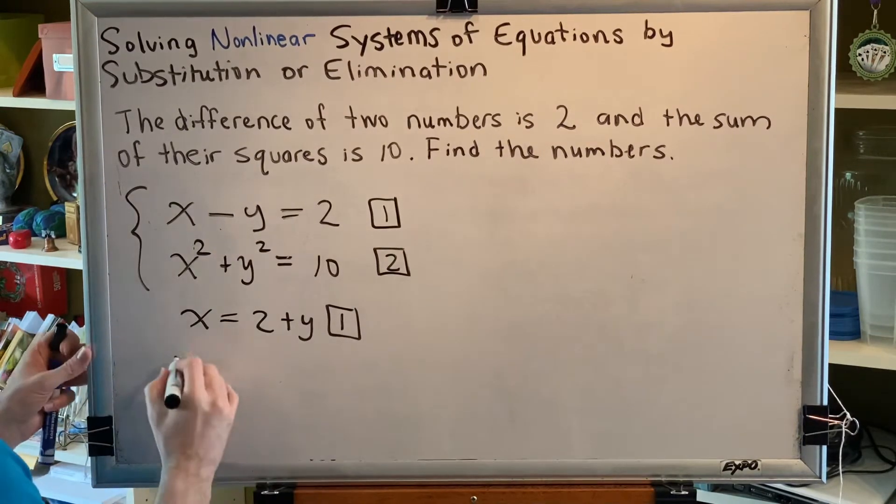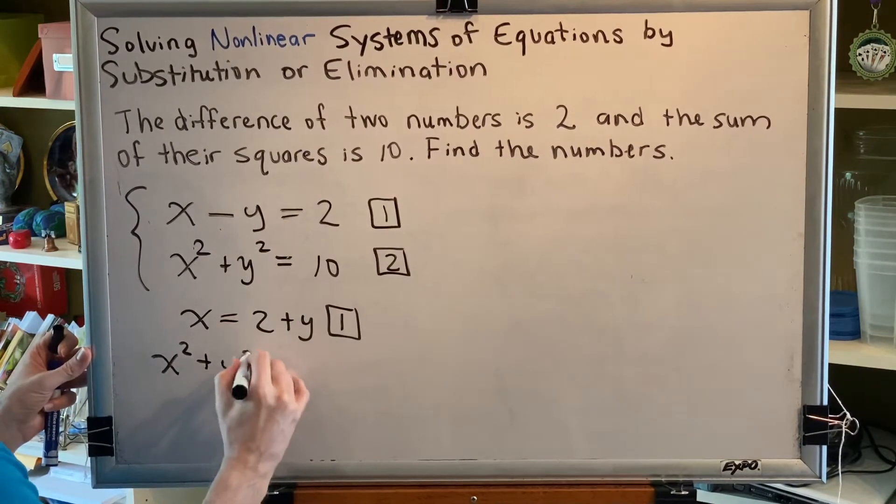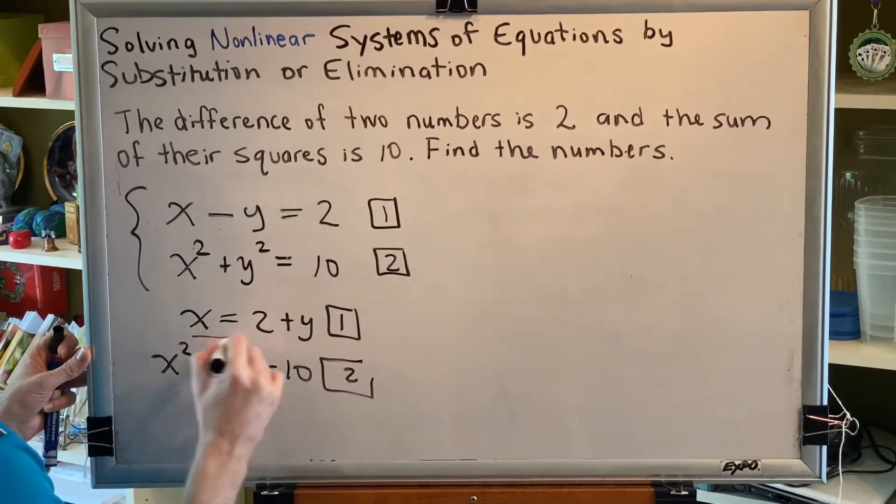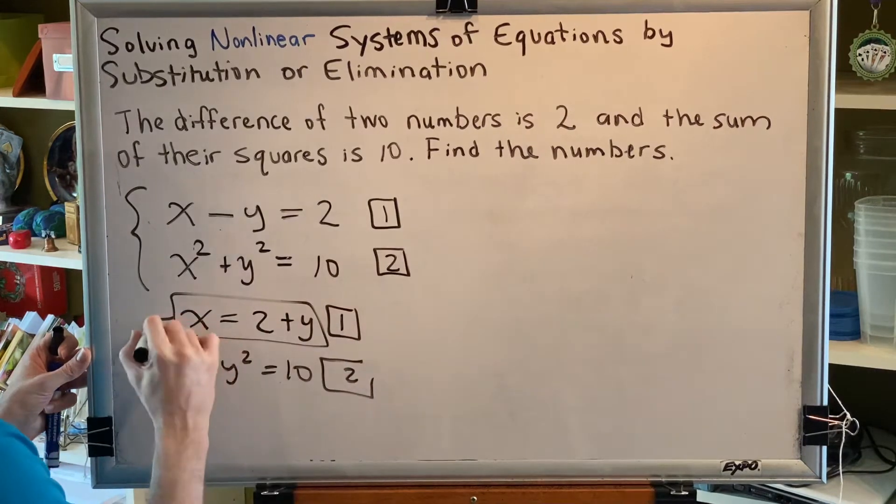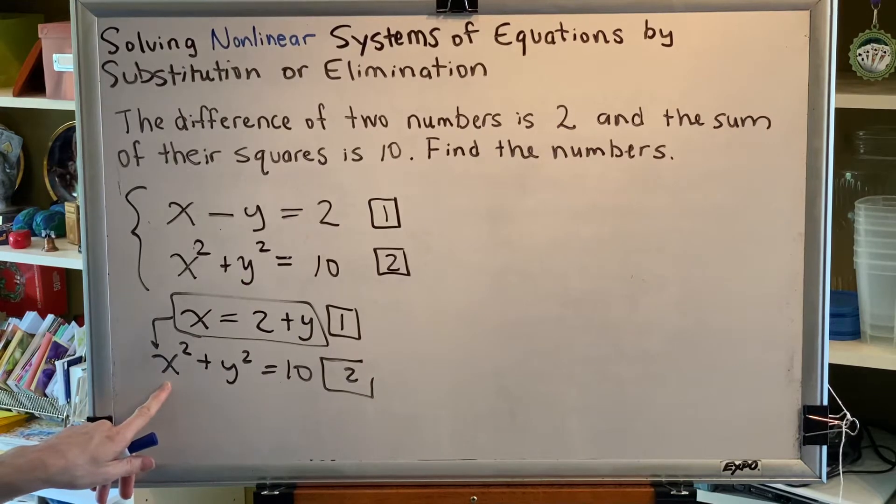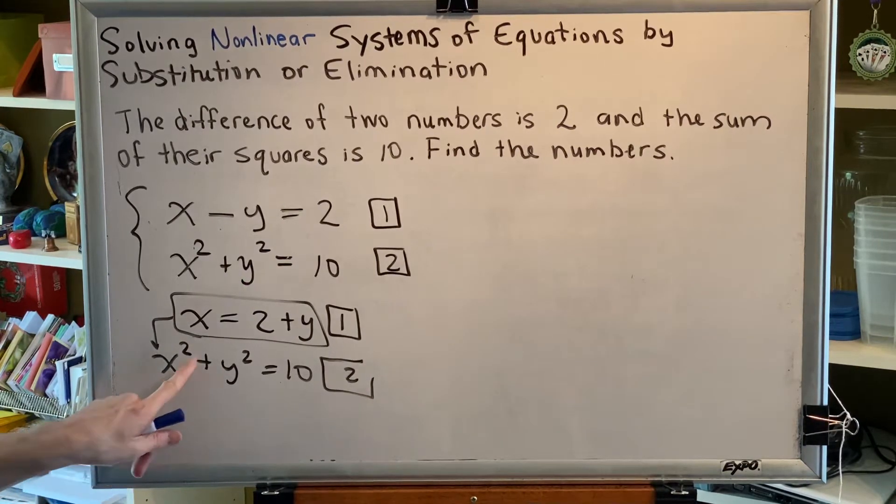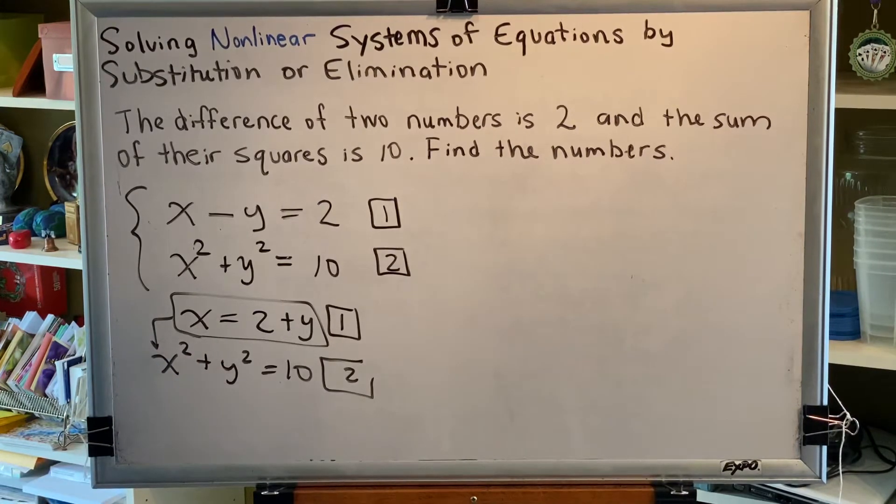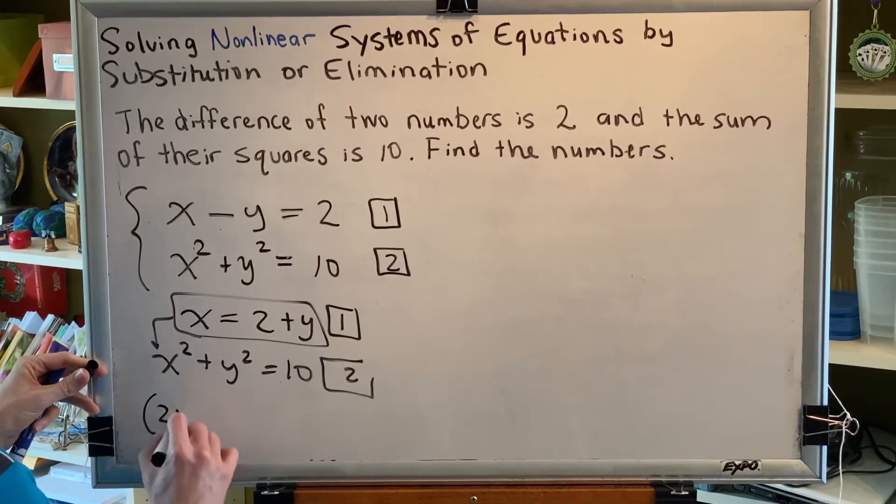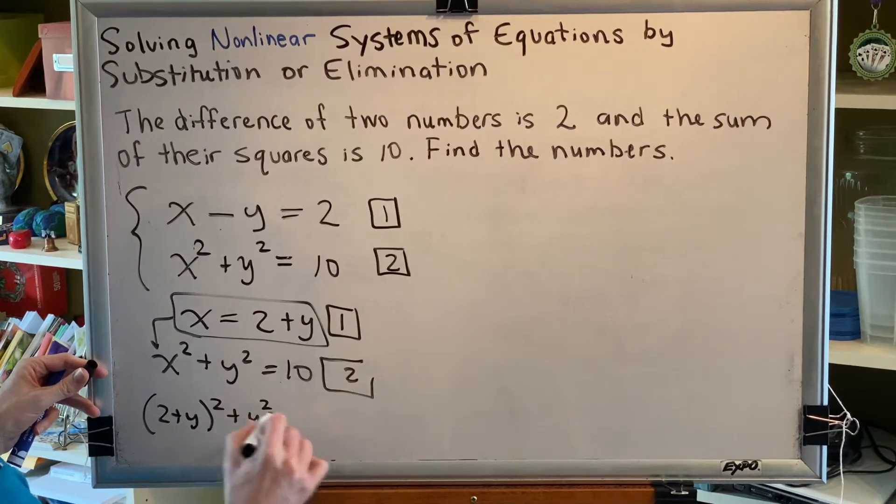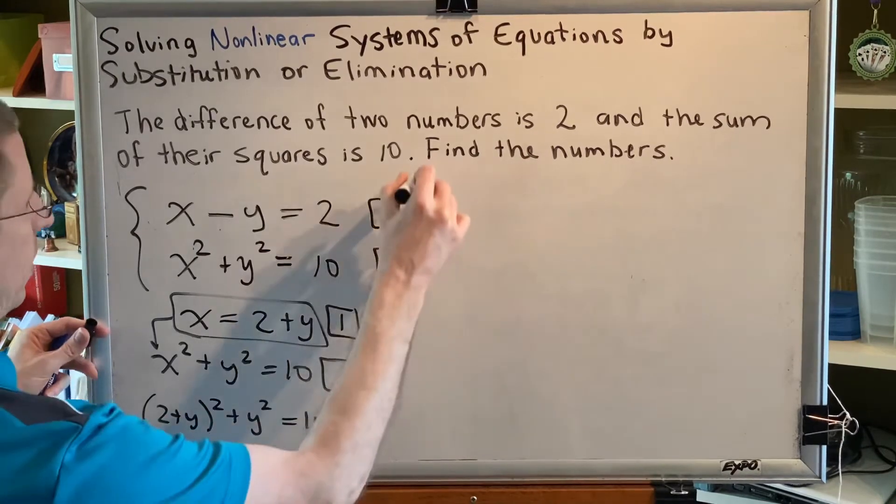Now, we're going to substitute that into equation 2. x squared plus y squared equals 10. And everywhere we see an x in equation 2, we're going to put 2 plus y instead. Now remember, whenever you replace something with something new in algebra, if the thing you are replacing has an exponent or a multiplying neighbor or is being subtracted, then parentheses are required. x has an exponent, so I need parentheses. 2 plus y must be in parentheses. So I get (2 plus y) squared plus y squared equals 10.